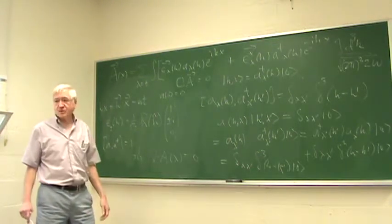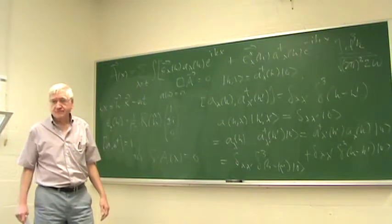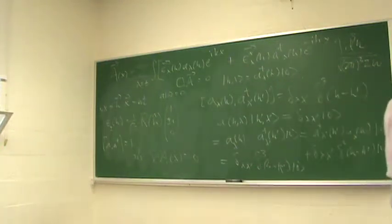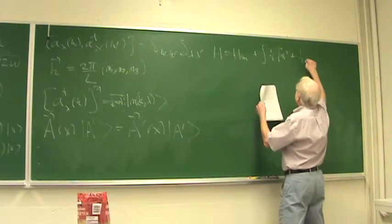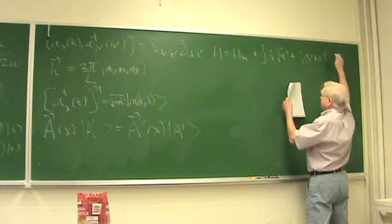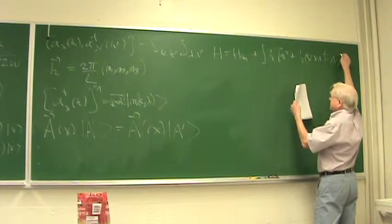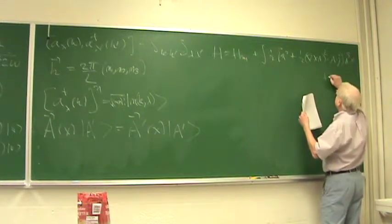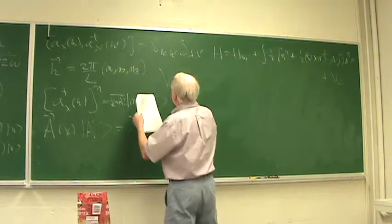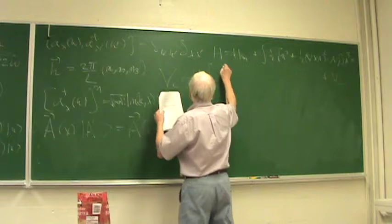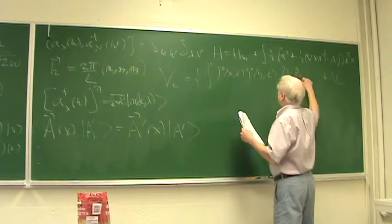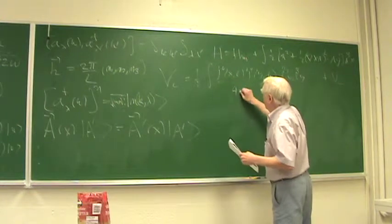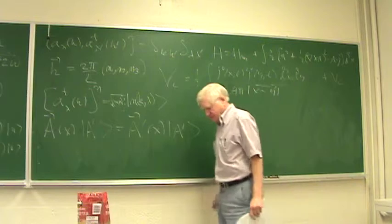We had a Hamiltonian, and the Hamiltonian is an integral of one-half pi squared plus curl of A squared — this is the magnetic field — minus A dot j d^3 x, plus the Coulomb term. The Coulomb term is one-half integral j0(x) times j0(y) d^3x d^3y over 4 pi |x minus y|.